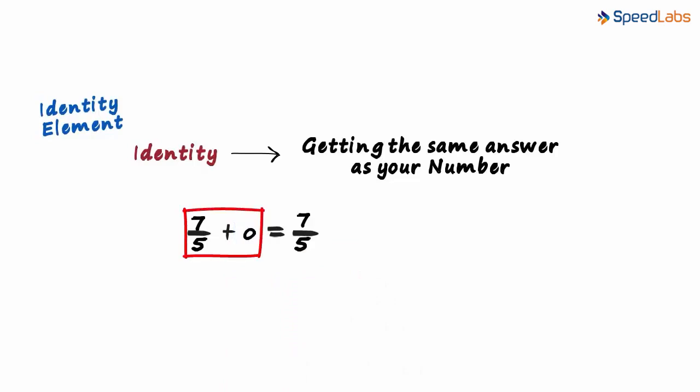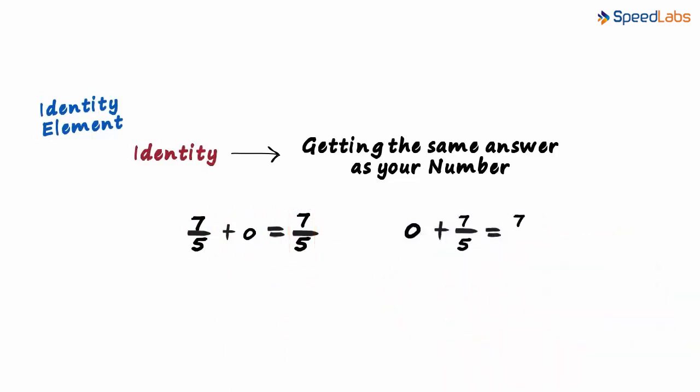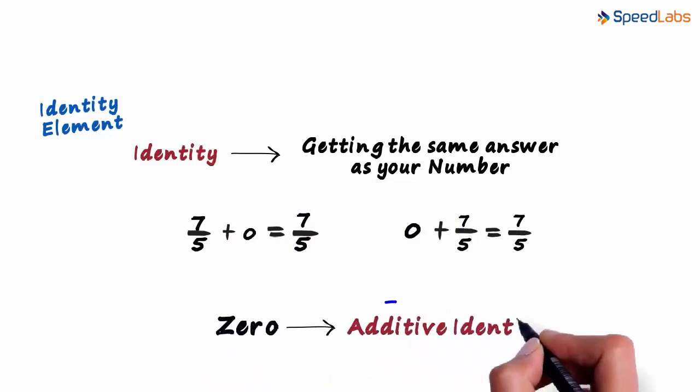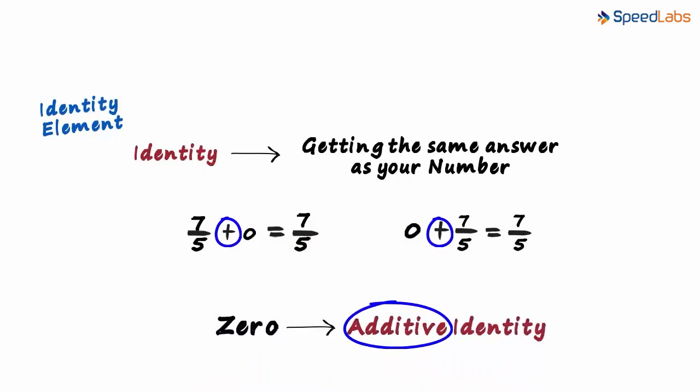7/5 plus 0 gives us 7/5. What about 0 plus 7/5? Even that gives us 7/5. So 0 is called the additive identity. Additive because it's added, and identity because we get the same answer as the original number.